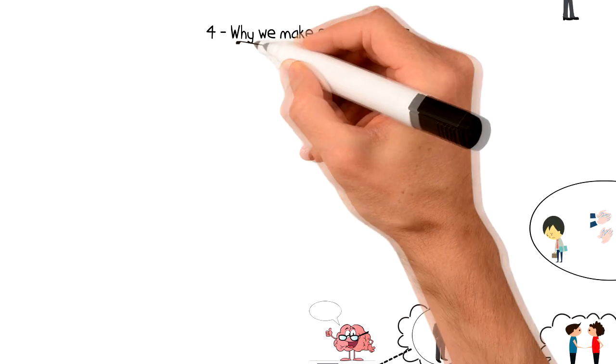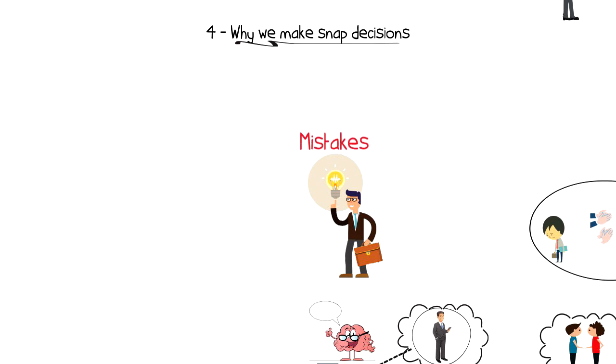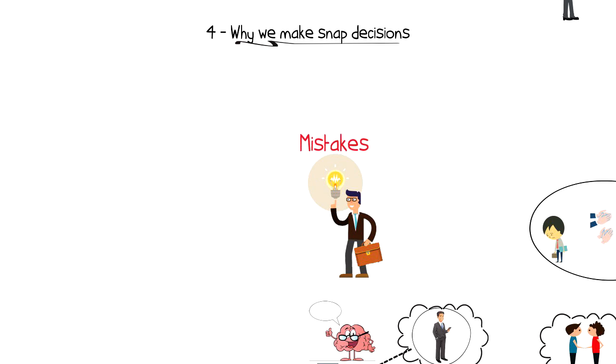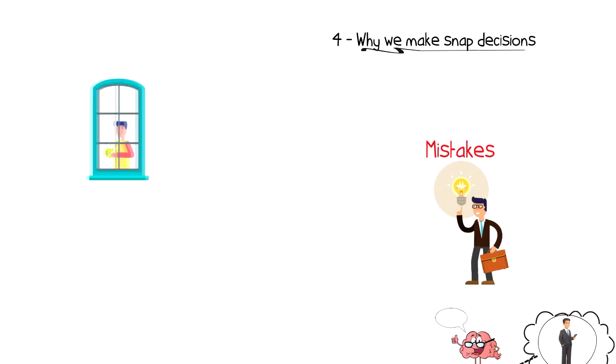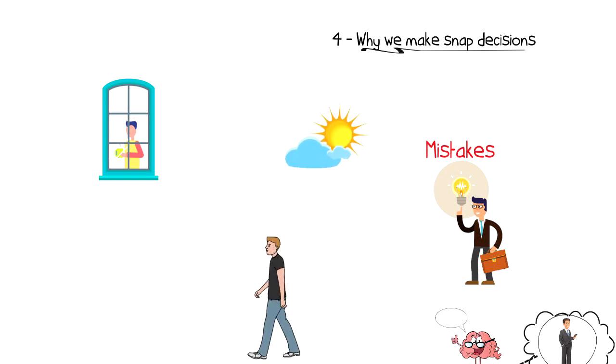Number four, why we make snap decisions. We are often making snap decisions based on the information that we have easily accessible and that often leads to making mistakes. For example, you might look through the window and see that it's sunny and someone is walking in a t-shirt. These two things might indicate that it's warm outside, but this assumption can be false.